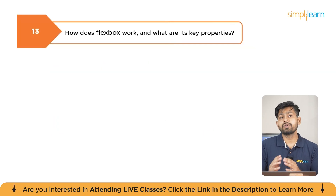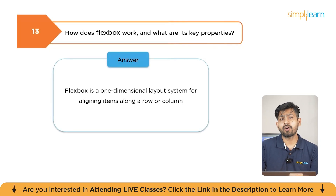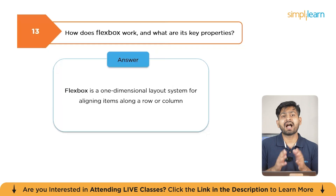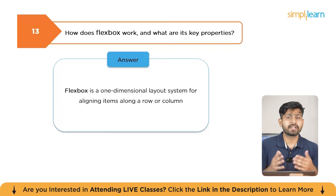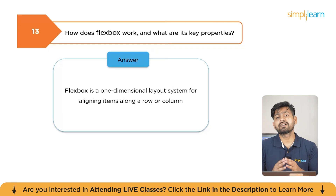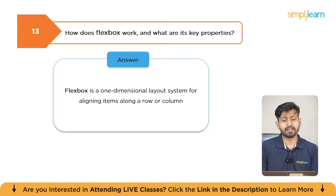How does Flexbox work and what are its key properties? Flexbox is a one-dimensional layout system that allows you to align and distribute space among items in a container. Key properties include display: flex for the container, justify-content, align-items, and flex-direction.